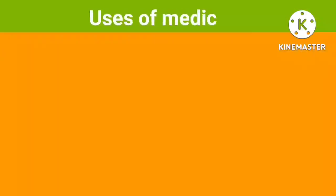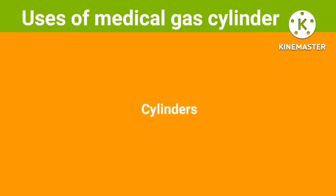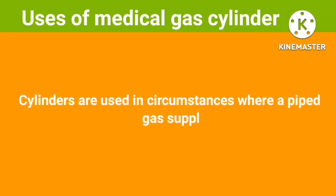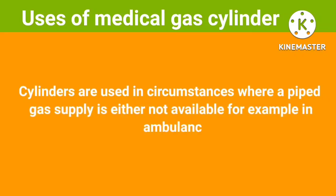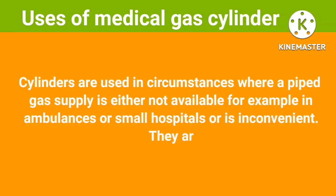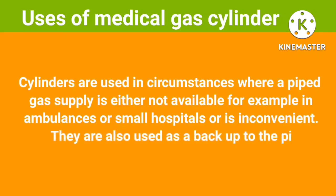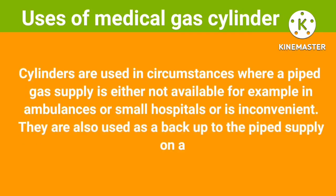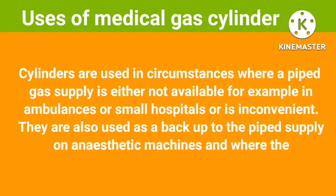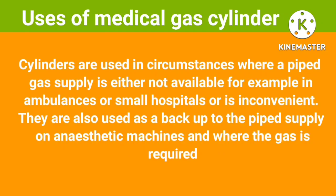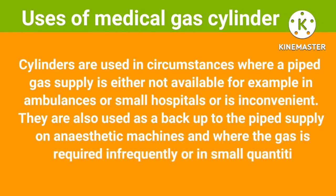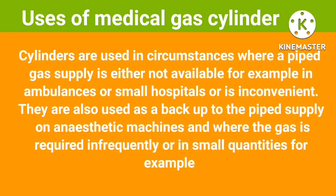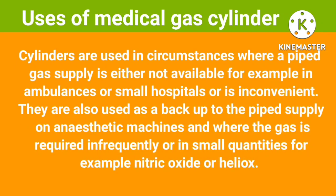Uses of medical gas cylinders. Cylinders are used in circumstances where a piped gas supply is either not available, for example in ambulances or small hospitals, or is inconvenient. They are also used as a backup to the piped supply on anesthetic machines, and where the gas is required infrequently or in small quantities, for example nitric oxide or heliox.